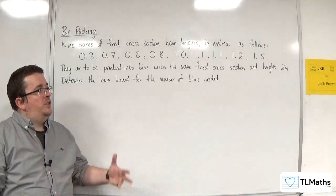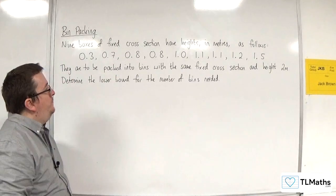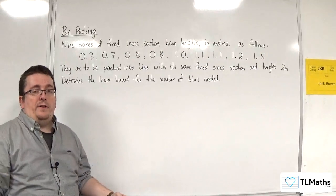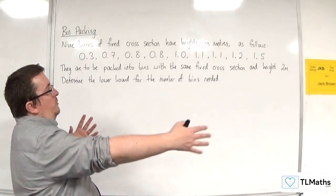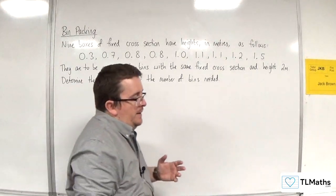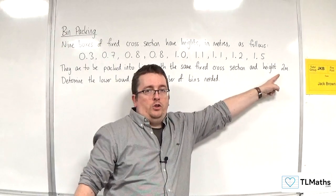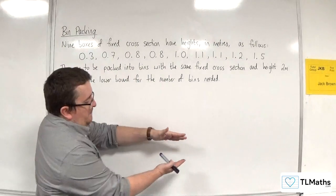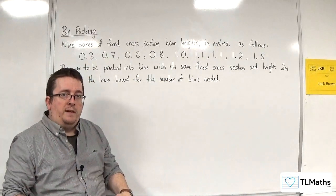Now, you might already have a gut reaction as to how you might figure that out. But it makes sense to add them all together because that will tell you what your total height is for all of your boxes together. And then if I divide that by the height of each bin, 2 meters, then that will tell me how many I could potentially fit into my bins of 2 meter heights.